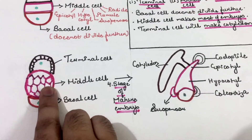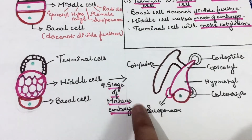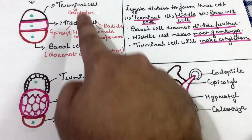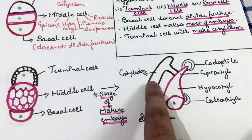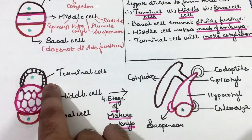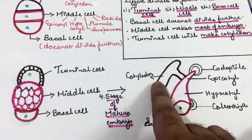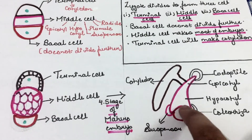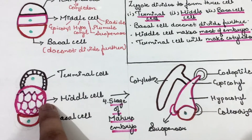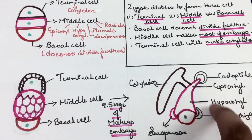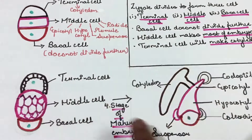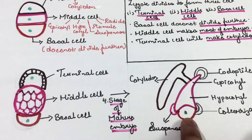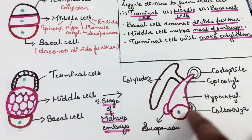After the stage of elongation comes the stage of mature embryo. The terminal cell gives rise to the cotyledon, shown in brown color. The middle cell forms most of the embryo — shown in pink color — including the epicotyl, hypocotyl, plumule, radicle, and the suspensor. The basal cell, shown in red, remains as it is. Hence, a mature embryo is formed.